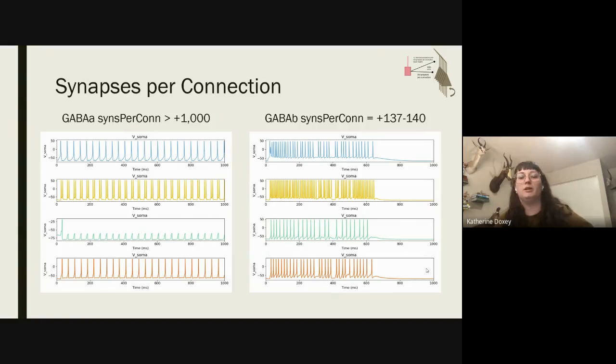And so we also wanted to explore the synapses for each connection. And so on the left shows the GABA-A. And to get that similar rate or increased duration between the spiking as seen before is that there had to be at least a thousand more synapses per connection. And I do want to note that this did also greatly increase the simulation runtime because there were a thousand extra synapses for five connections. And so this went from 50 seconds to five minutes. And then on the right, it still took a good amount more than when there was just a soma connection. But around when there were 137 extra synapses is when the persistent activity started to taper off.